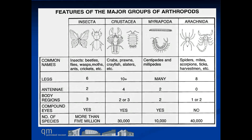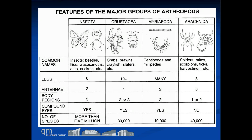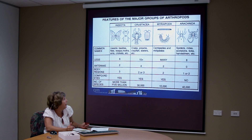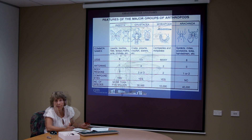In comparison, the spiders, which belong to the Arachnida, have eight legs and never have antennae. So that's one of the ways that you can tell the difference between those two particular groups.